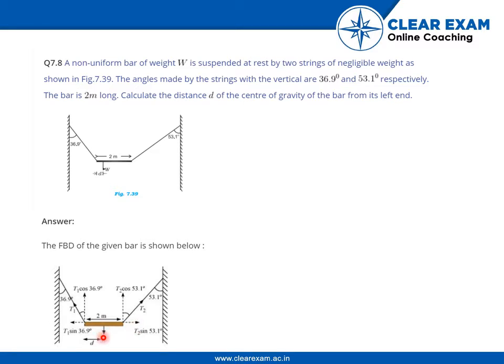The weight is acting downwards. The tension T2 has two components. One is the cos component and one is the sine component. As this angle is given as 53.1 degrees, this is 53.1 degrees as well. And, this is T2 cos 53.1 degrees and this is T2 sin 53.1 degrees.